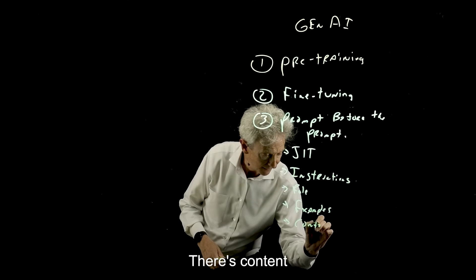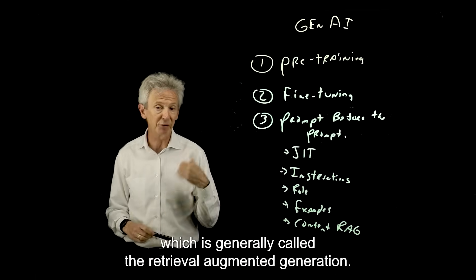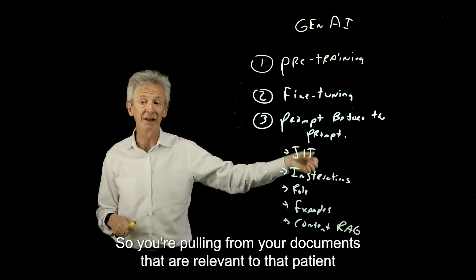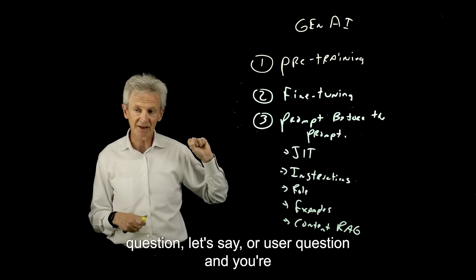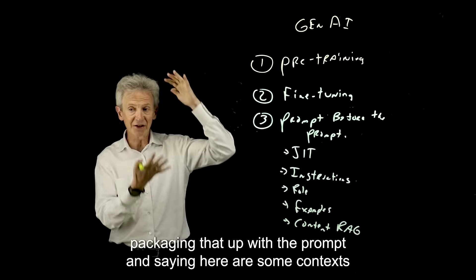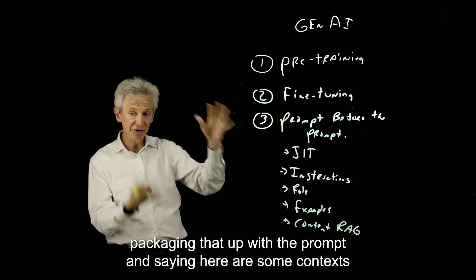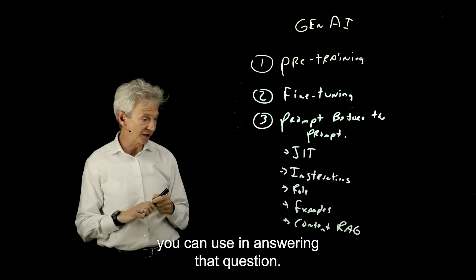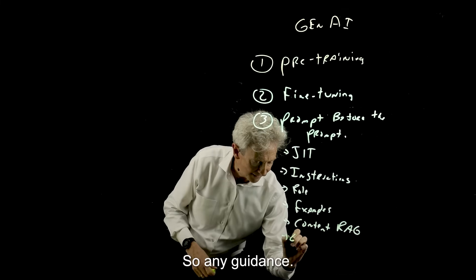There's content, which is generally called retrieval augmented generation. So you're pulling from your documents that are relevant to that patient question, let's say, or user question, and you're packaging that up with the prompt and saying, here's some context you can use in answering that question. So any guidance, hints?